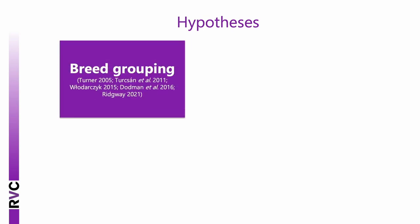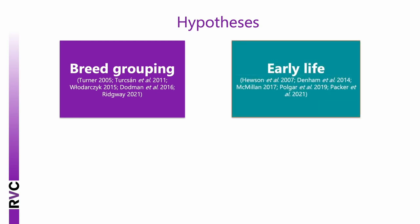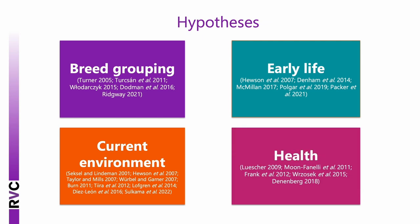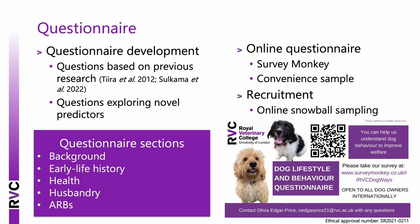Current environment hypotheses included that higher levels of cognitive and physical enrichment would reduce ARBs, spending time crated would increase risk, and dogs housed with other conspecifics would be less at risk. Health hypotheses included that dogs with a seizure history are more likely to fly snap, and that dogs with ocular disorders or visual impairment are more likely to show light and shadow chasing or fly snapping. The questionnaire was developed using previous research and previously identified risk factors, and also asked broader questions to explore novel predictors.